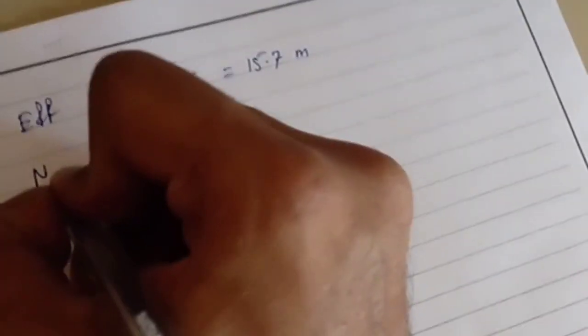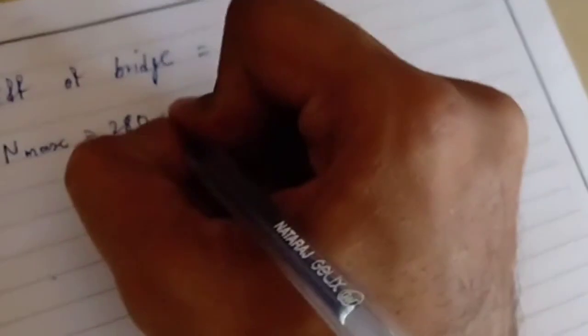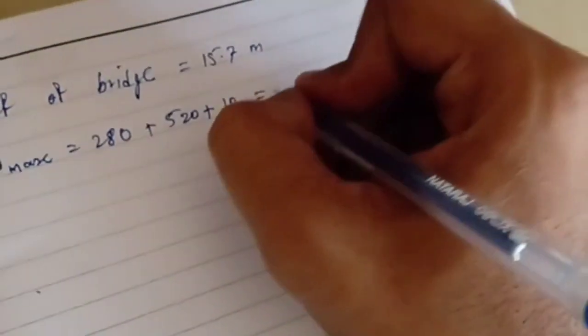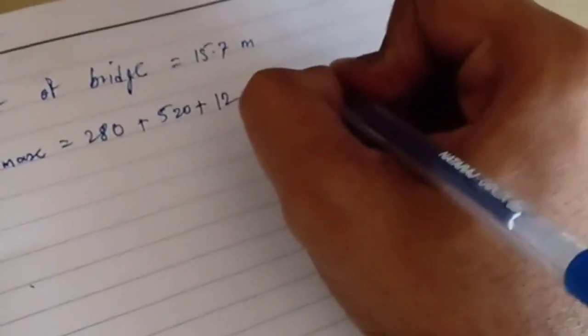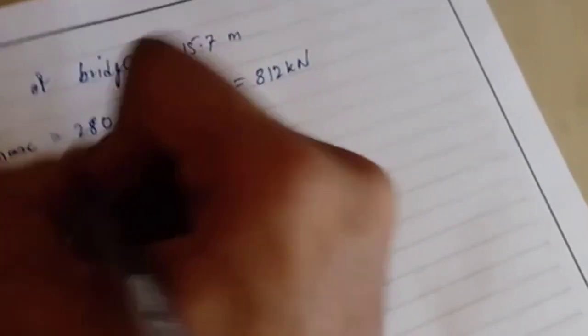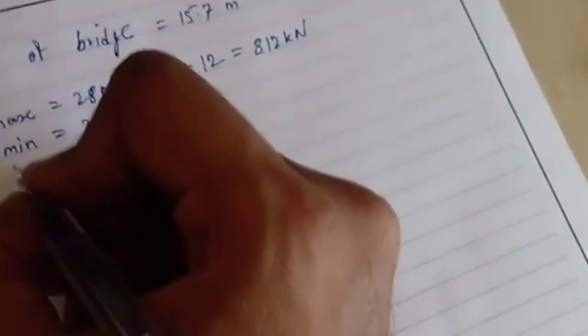The maximum load we are taking here: 280 kN from dead load, 520 from live load, and 12, that becomes 812 kN. And the minimum load is only the dead load, that is 280 kN.